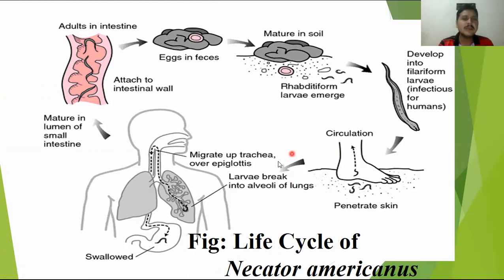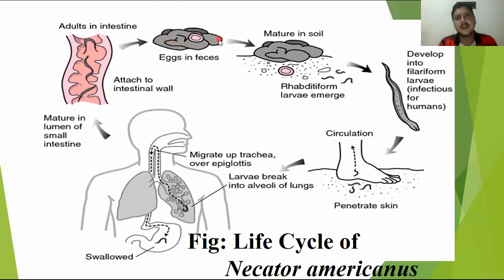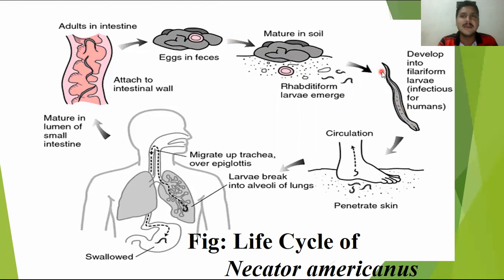In the life cycle diagram of Necator americanus, you can see the human host and the intestine region where the worms live. The worms are very small in size and grey in color. They release eggs through the feces from the human body, which also contains many eggs. The eggs mature on the soil, developing first into rhabditiform larvae and then into the filariform larvae — the infective stage — which is thread-like. The filariform larvae then penetrate human skin and the cycle continues.